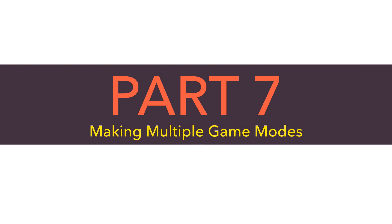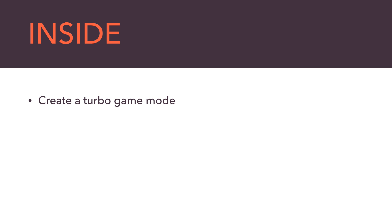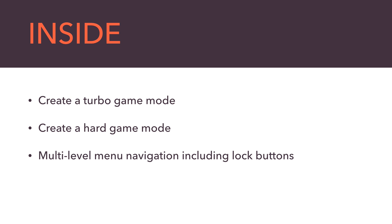Now in Part 7, we are going to make multiple game modes to choose from. We're going to add a turbo mode and a hard mode, and I'm going to show you how to make multi-level menu navigation that we can use to navigate to our new game modes, including locked start buttons on each mode for the player to work toward.